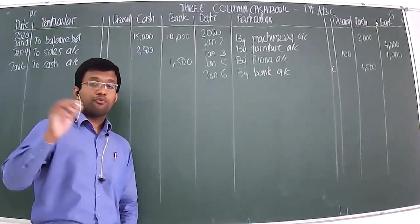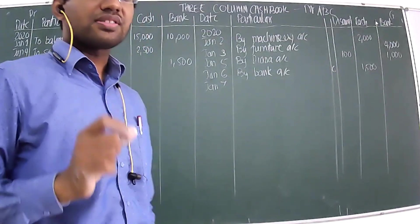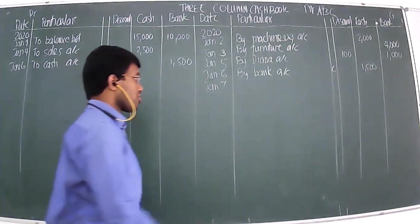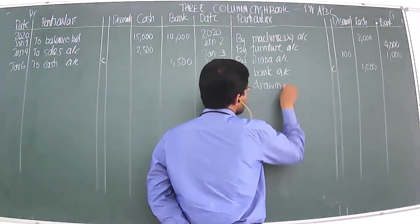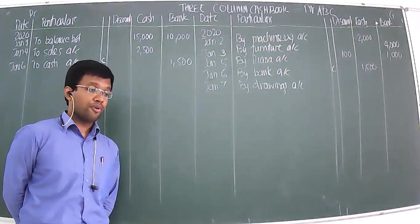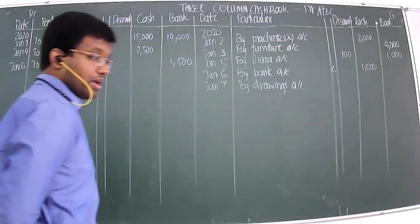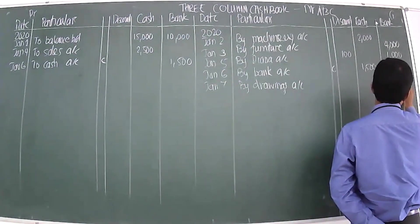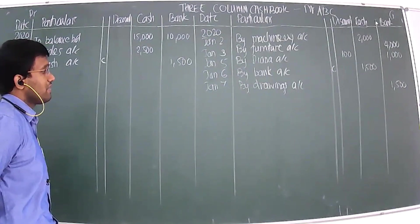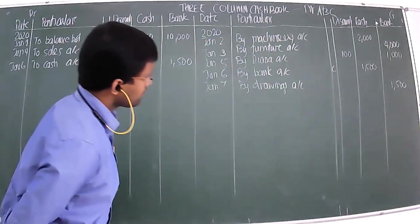January 7th: withdrew by cheque for personal use ₹1,500. Withdrawing money for personal use is called drawings. The money goes out from the bank account via cheque. Entry: By Drawings Account, ₹1,500 in the bank column.